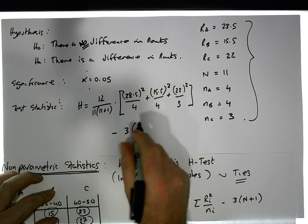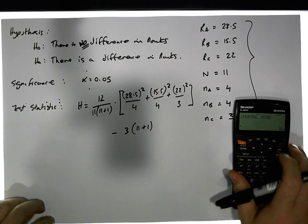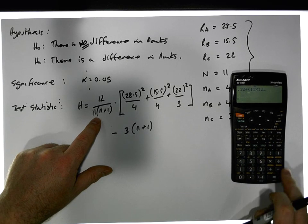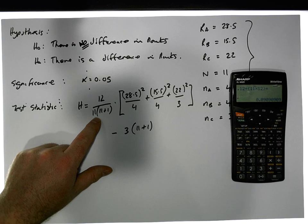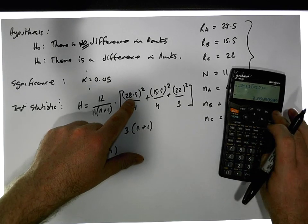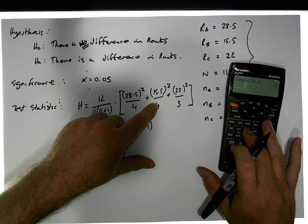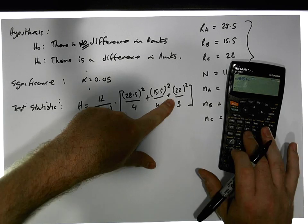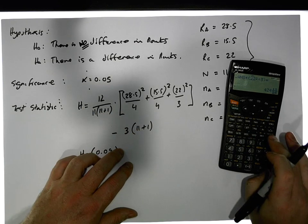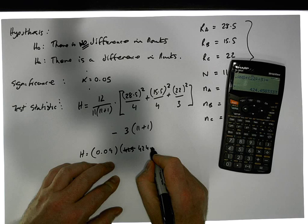So we subtract 3 times 12 from the total. The factor 12 divided by (11 times 12) gives us 0.09. The bracketed sum — 28.5 squared over 4 plus 15.5 squared over 4 plus 22 squared over 3 — evaluates to 424.46.